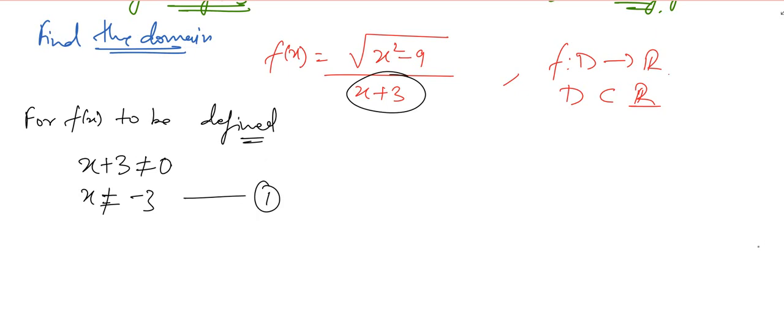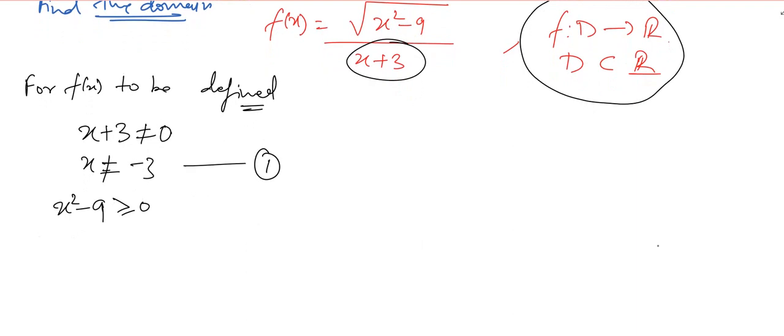Notice that everything is being dealt in the real numbers, so the next thing is x squared minus 9 has to be greater than or equal to 0, because within the root we can't take anything negative in this part of our course.